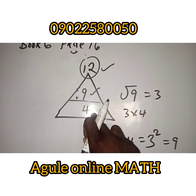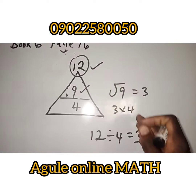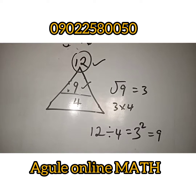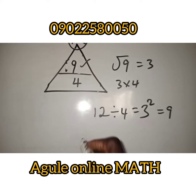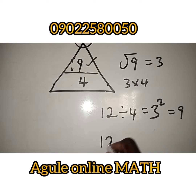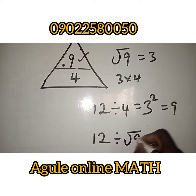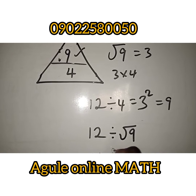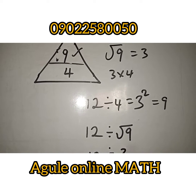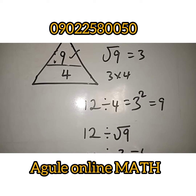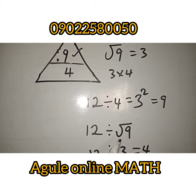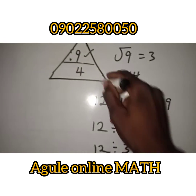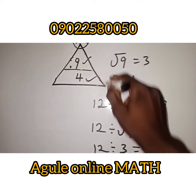So, if you want to get 4, it's also a simple thing. You'll just do 12 divided by the square root of 9. So, 12 divided by the square root of 9, which is 3 — the answer is 4. 12 divided by 3 is 4. That is all to get 4.